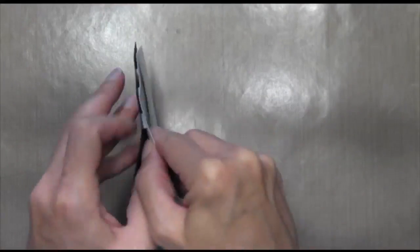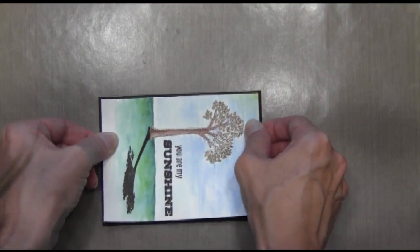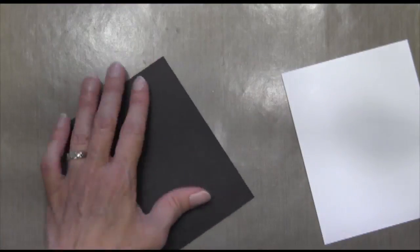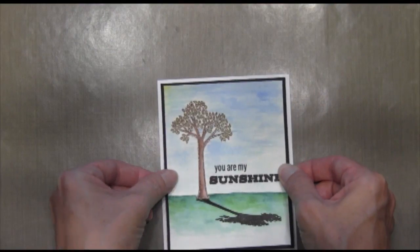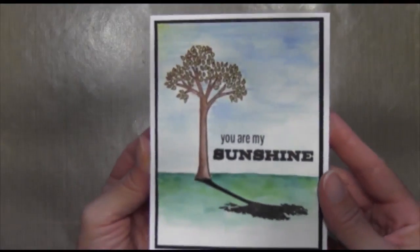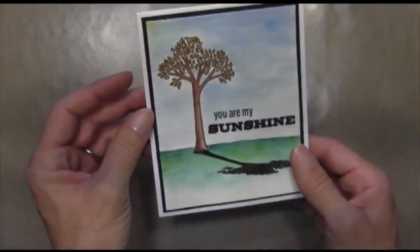Anyway so I used some dimensionals, some foam adhesive, and then as long as you take it off within the first few seconds, which I do a lot because I don't get it lined up exactly perfectly at first, it'll come off. And then I just put that onto a card base that's four and a half by five and a quarter. I'm sorry, four and a quarter by five and a half. Folded card stock and that's Neenah Solar White.